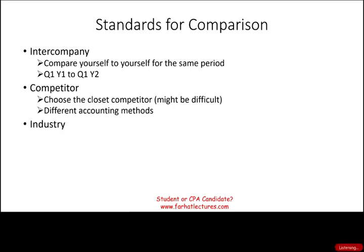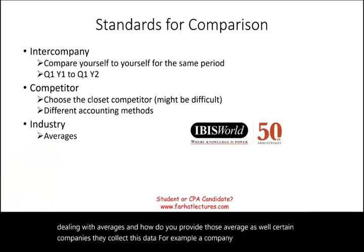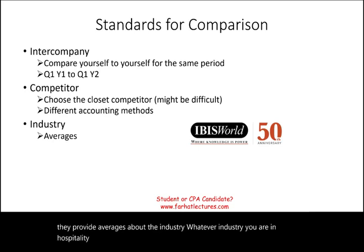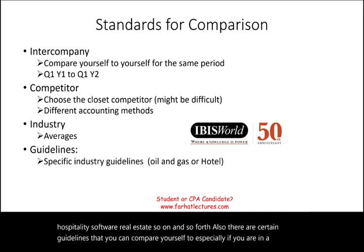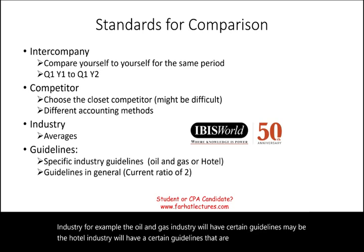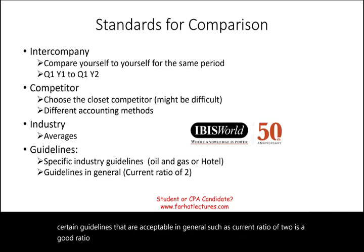Also, you can compare yourself to industry averages. Certain companies collect this data — for example, a company called IBISWorld provides averages about whatever industry you are in: hospitality, software, real estate, and so on. There are also certain guidelines you can compare yourself to, especially if you are in a very specific industry — the oil and gas industry will have certain guidelines, and the hotel industry may have different ones. There are also general guidelines, such as a current ratio of two being considered a good ratio, but again, those are very general and may or may not apply to your industry.